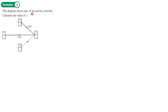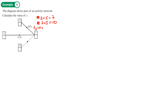Example 5: the diagram shows part of an activity network — calculate the value of x. We're calculating an early event time, so that's a forward pass, meaning we find the highest value. Route one: 2 plus 5 gives 7. Route two: 7 plus 3 gives 10. Route three: via the dummy, which has no time, gives 9. Forward high — we take the highest value, so x equals 10.